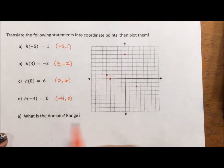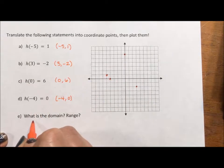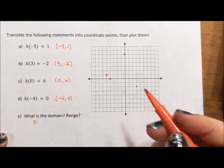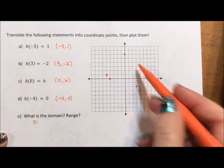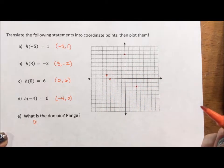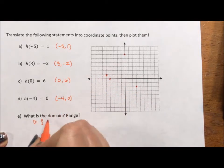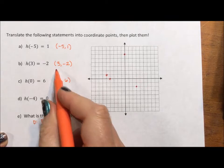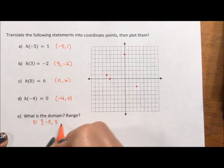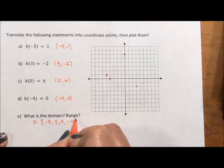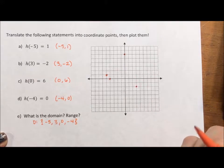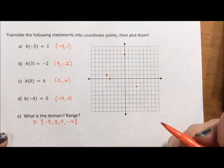It says, what is the domain and range? So domain is the set of all x values. In this case, because there's four dots, it's literally like a grocery list. It's listing off the four x values. My x values are negative 5, 3, 0, and negative 4. I use these curly brackets because it's a set notation and it's the set of these four values.